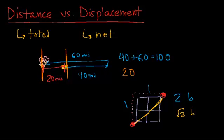However, displacement has a very clear direction. This displacement was 20 miles to the left. And Kathy's displacement here was root 2 blocks in the 45 degree direction.